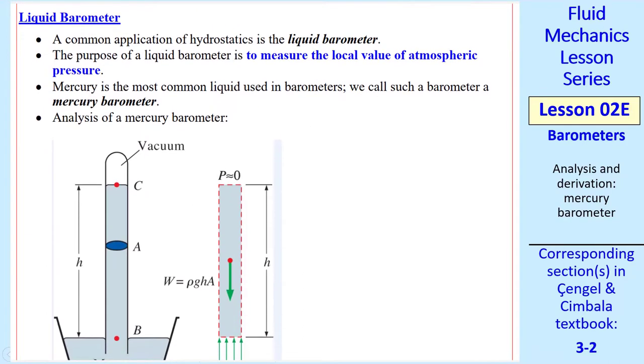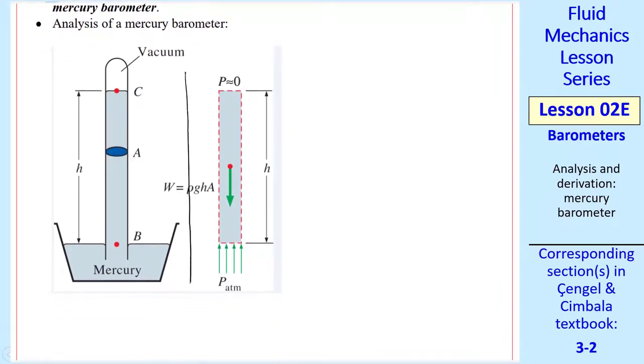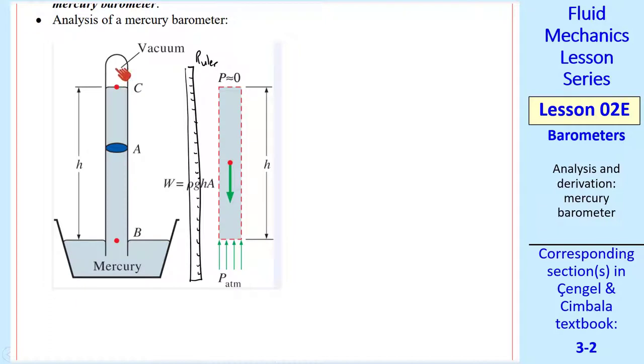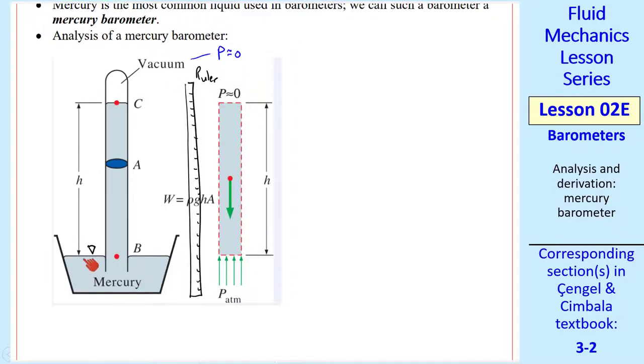Now let's talk about a liquid barometer. This is a common application of hydrostatics. The purpose is to measure the local value of atmospheric pressure. This would be an absolute pressure. Mercury is the most common liquid used. We call such a barometer a mercury barometer. Let's analyze a mercury barometer. What's not shown here in an actual case would be a ruler where we can measure this height h. How do you fill this test tube with mercury like this? Well, you'd fill up the test tube and then quickly insert it upside down into a vat of mercury. What'll happen is some of the mercury will fall until it stops at this stable location. There will be a gap up here, which we're going to consider a pure vacuum. In reality, the pressure here is the vapor pressure of mercury, but the vapor pressure of mercury is very tiny. So for our approximation, we assume that p ≈ 0 in this gap. This portion is open to the atmosphere, so the pressure is p_atm there.